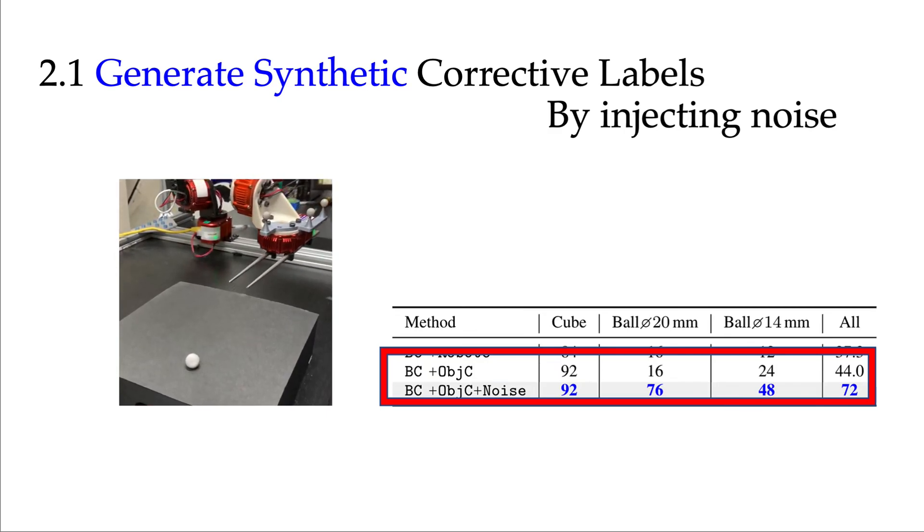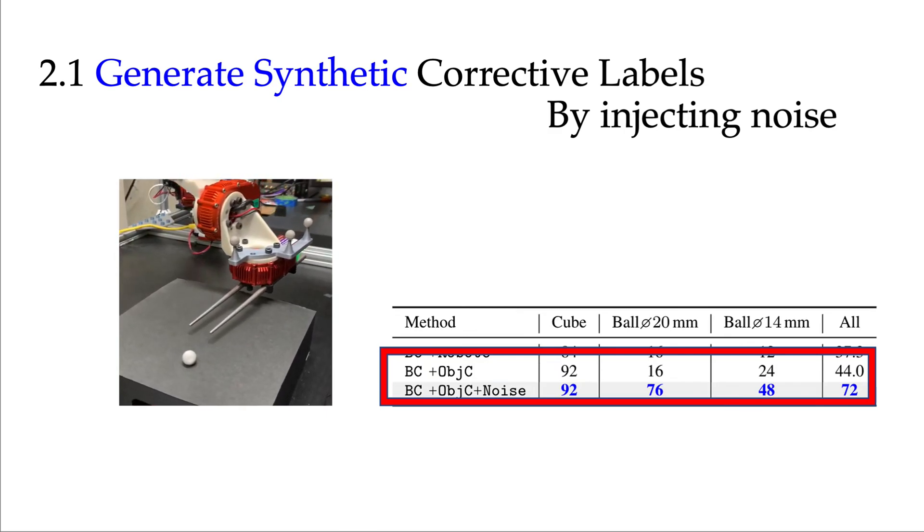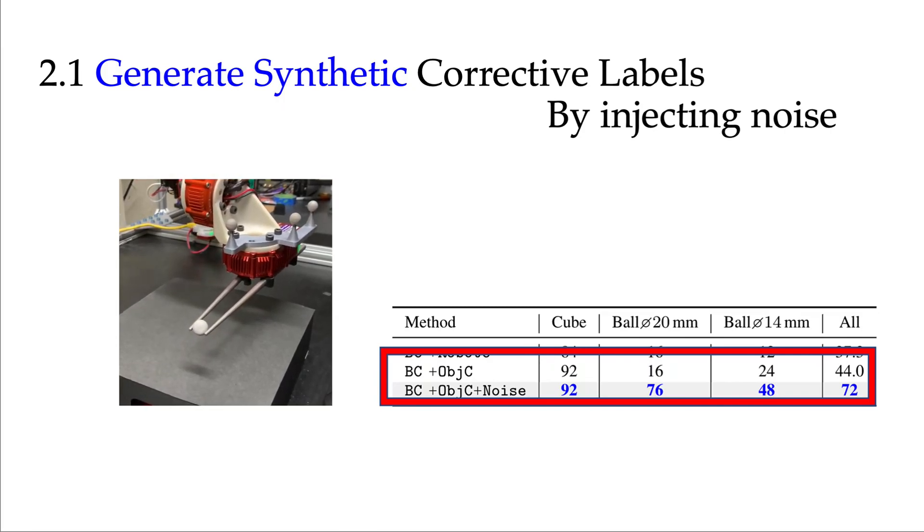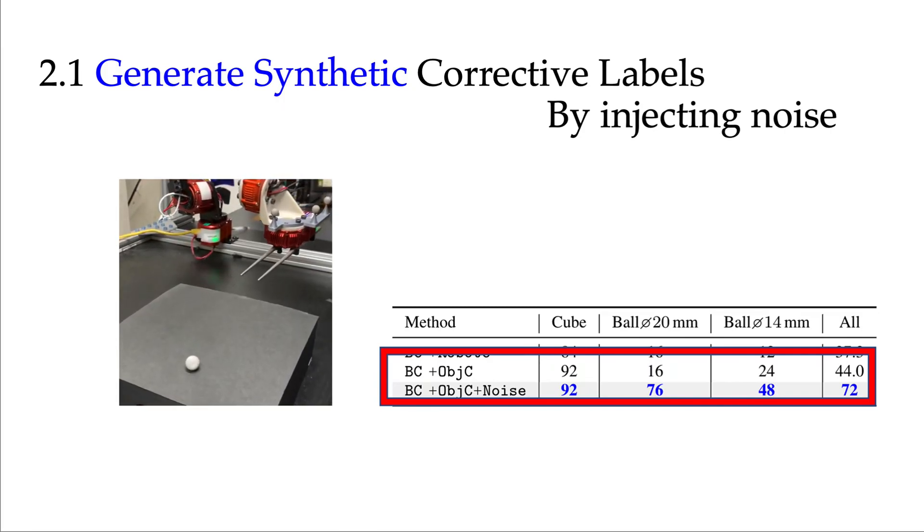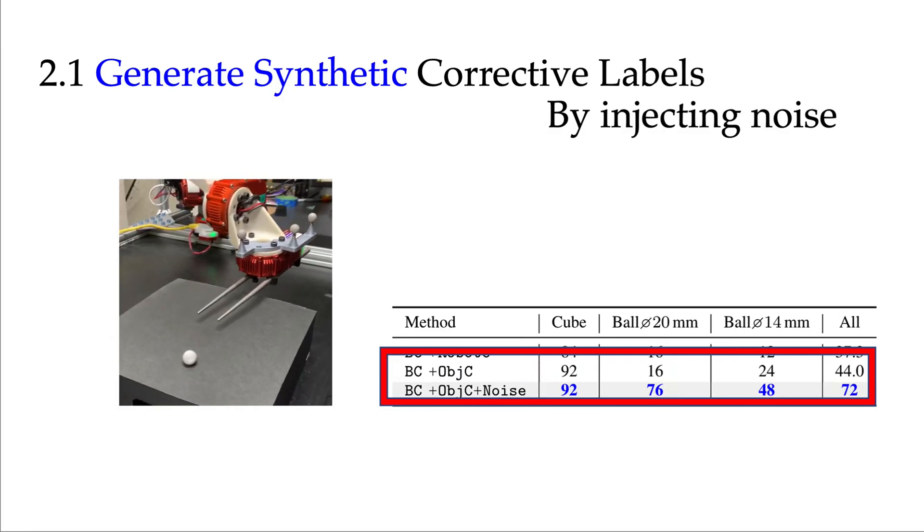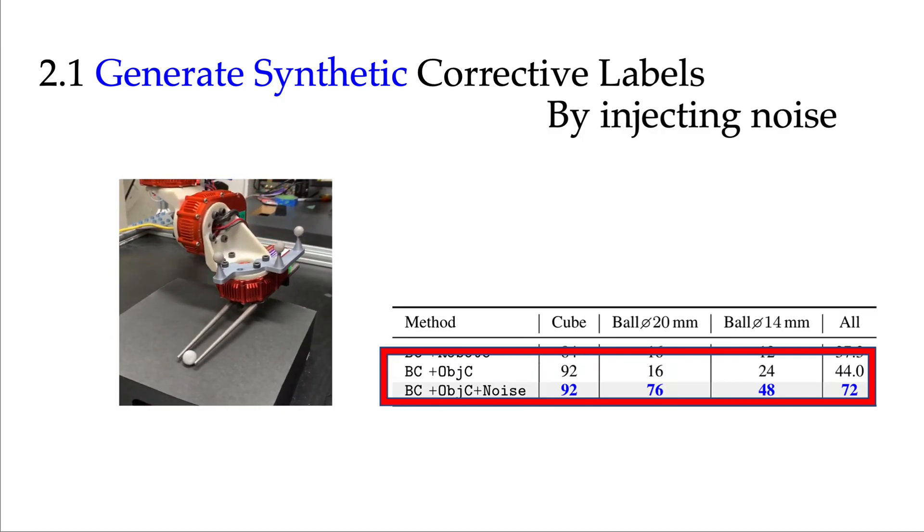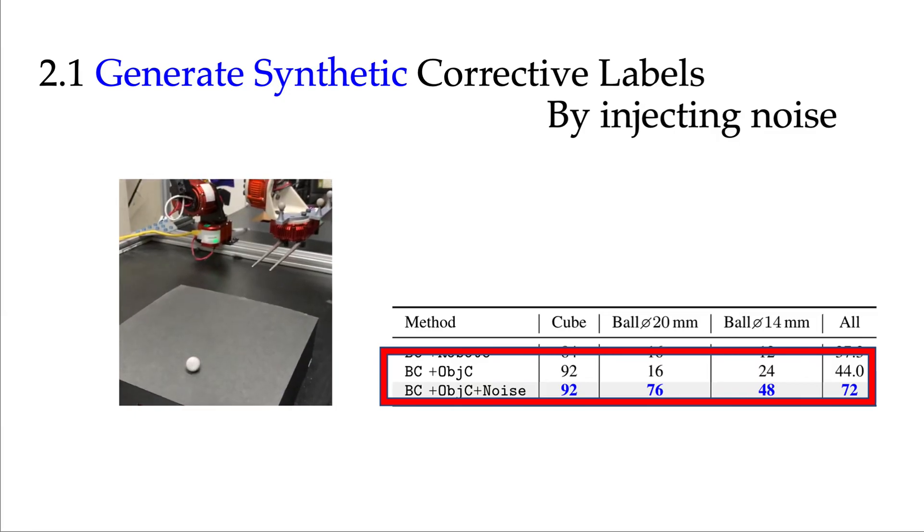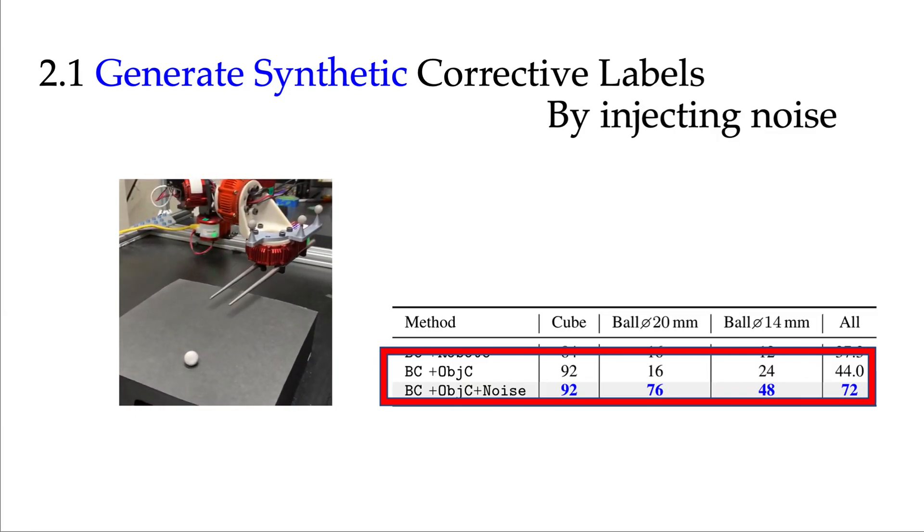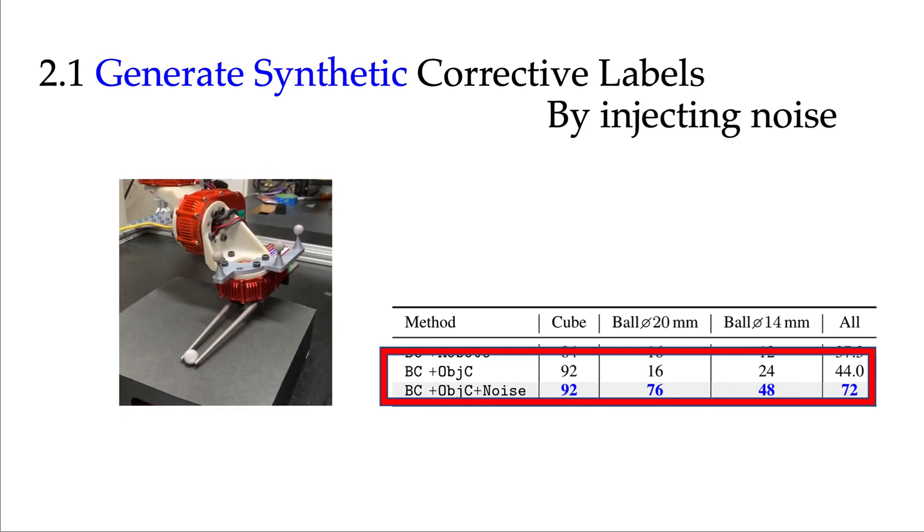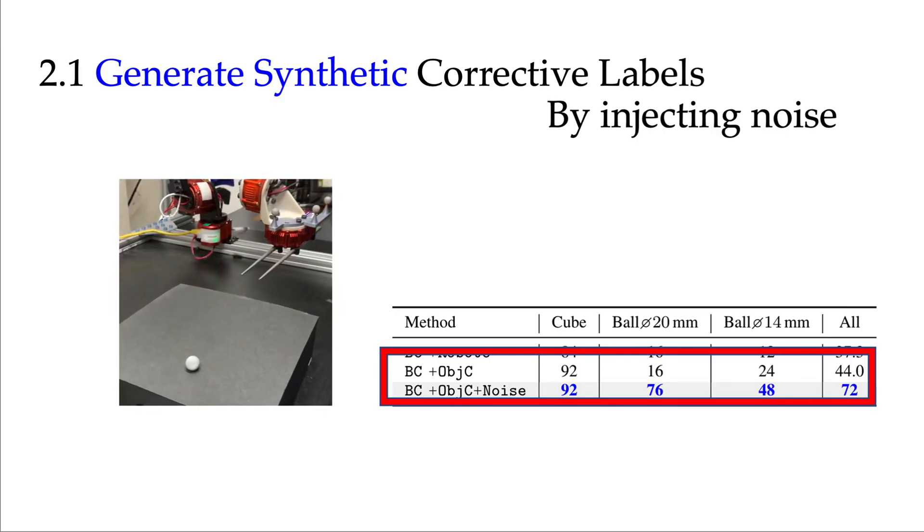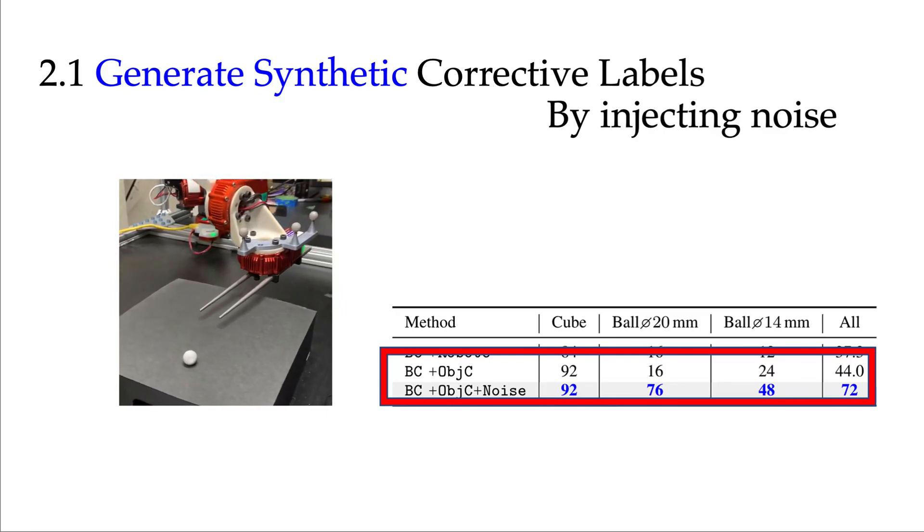When we test this on our robot, we witnessed a great improvement in the agent success rate. Honestly, the authors ourselves are shocked about the amount of improvements here. If we look at the success rate change for the big ball, the ball 20 millimeter, we see that the success rate improved from 16 percent to 76 percent. If we look at the video, we can see that the robot still rotates a tiny bit as it approaches the object.